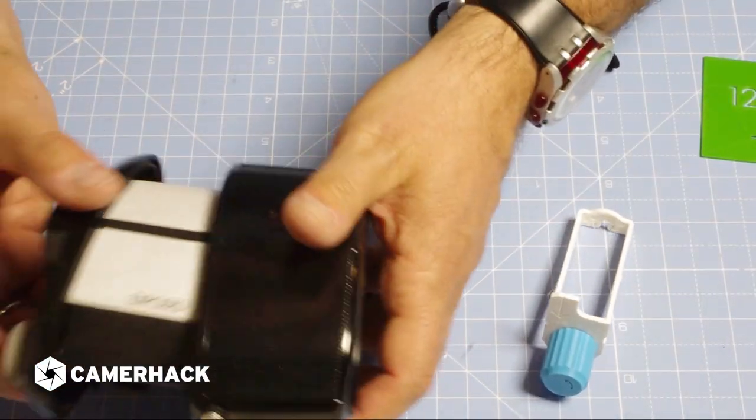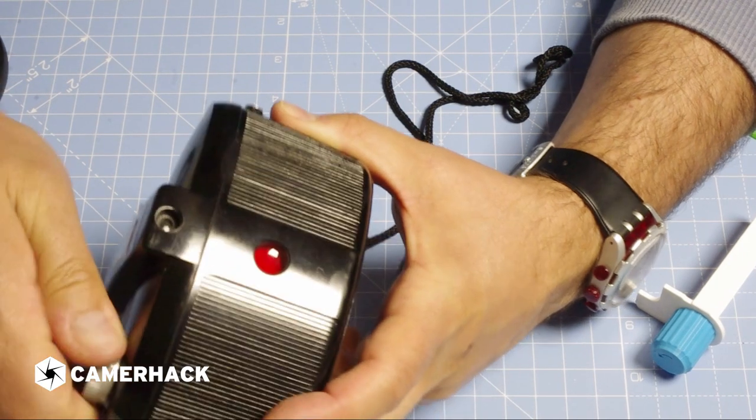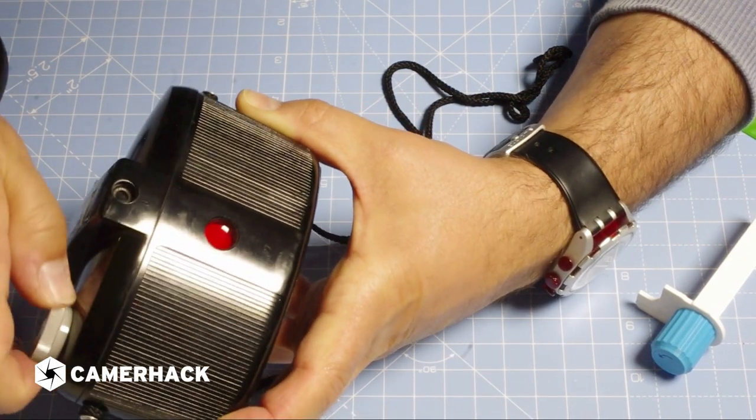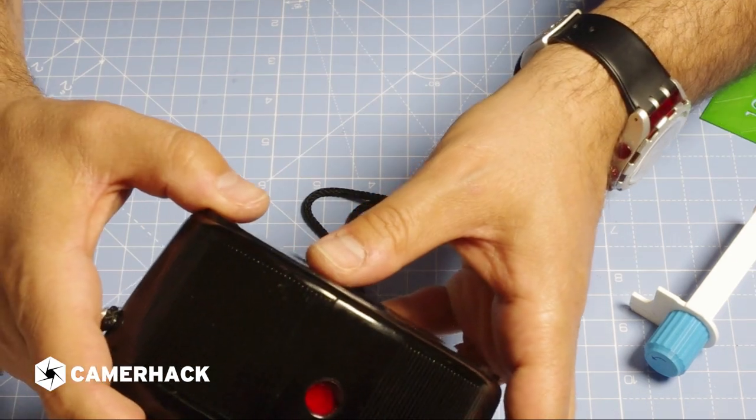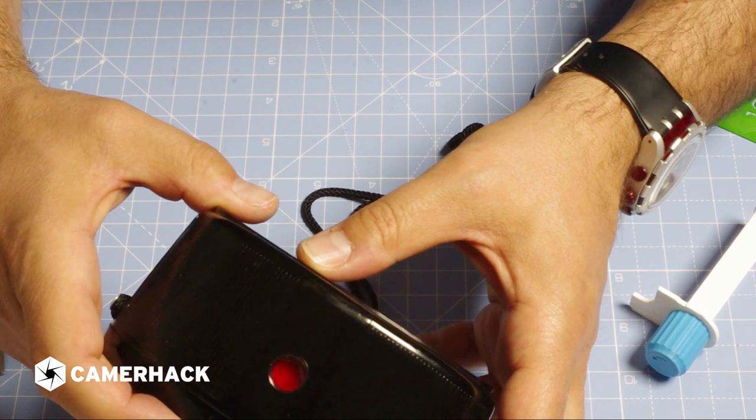So now we close the camera. And start winding. Until we see that the signs on the backing paper are visible through the red window. So maybe you can see the number 8.